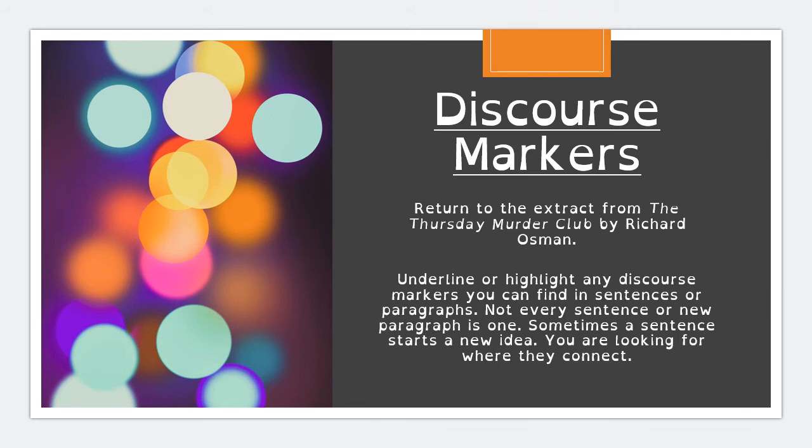So here's what I want you to do next. I want you to go back to that extract from the Thursday Murder Club and I want you to underline or highlight any discourse markers you can find in sentences or paragraphs. There are going to be a few, and I'm only going to pick out a few for you on the next slide. Not every sentence or new paragraph has one — sometimes a sentence just starts a new idea. You're looking for where these ideas connect together. Pause the video and come back to me when you're done.